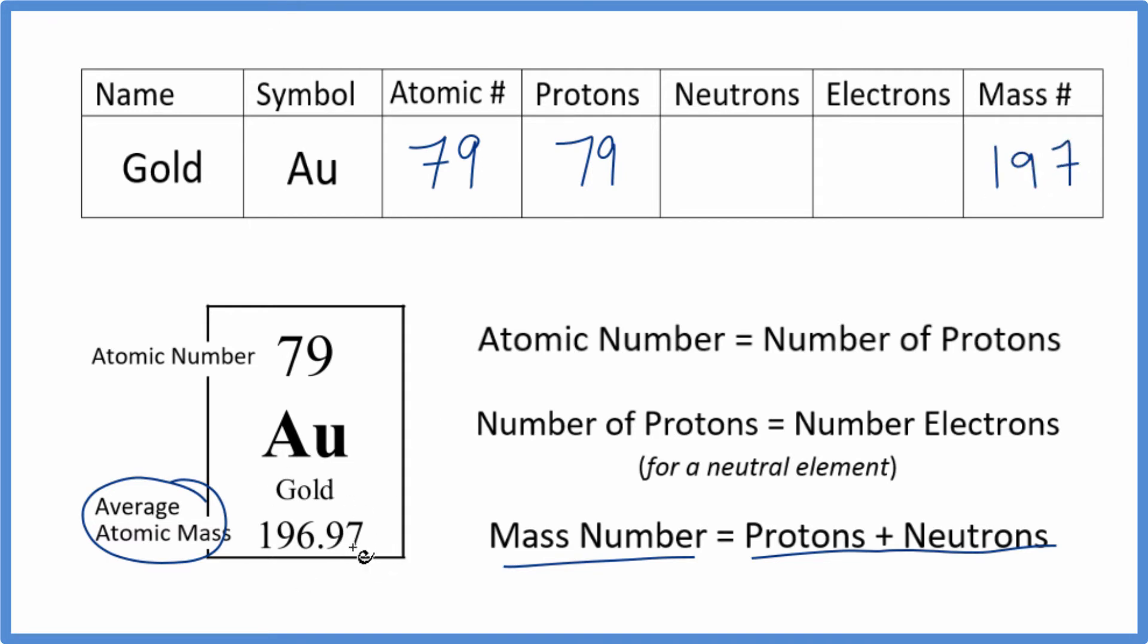It's not exact because there are a few very minor isotopes of gold that end up giving us a slightly different number here. We round it to 197, and then we can figure out the neutrons because the mass number equals protons plus neutrons. So 79 plus something will give us 197. We could also just subtract 79 from 197. We get 118 neutrons for gold.